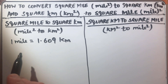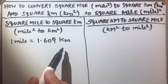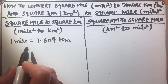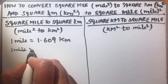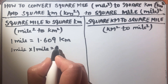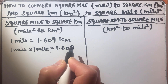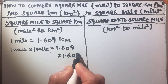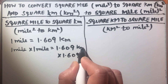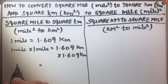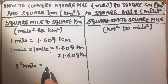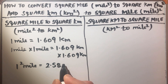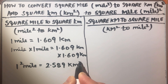We all know that one mile is 1.609 kilometers. So to find how much is 1 square mile, we'll multiply 1 mile times 1 mile. On this side too we have to multiply 1.609 times 1.609 kilometers. So we'll get a conversion factor: 1 square mile is equal to 1.609 times 1.609, which is 2.589 square kilometers.